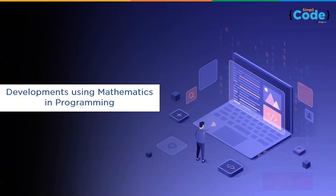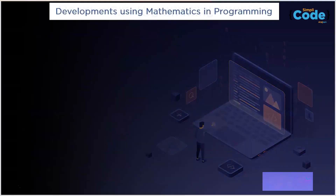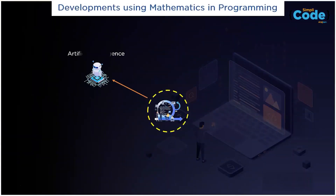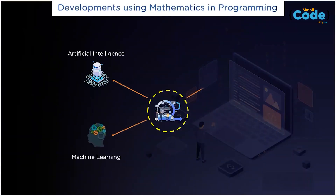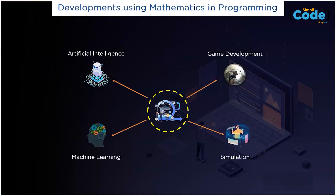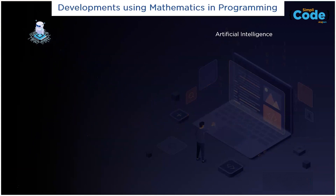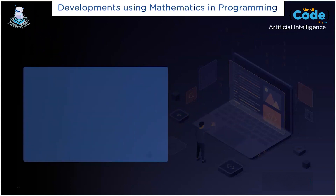Now, let's understand some developments made using mathematics in programming. Mathematics is involved in some of the major developments like artificial intelligence, machine learning, game development, and simulation. Let's have a look at the first one — artificial intelligence.